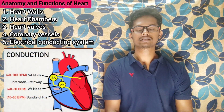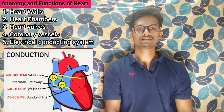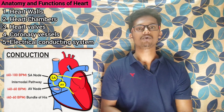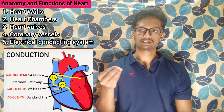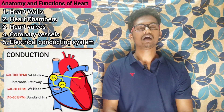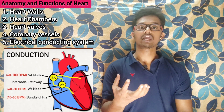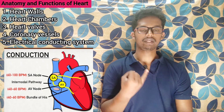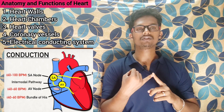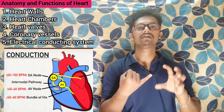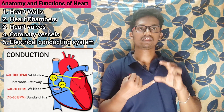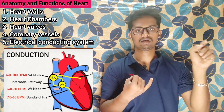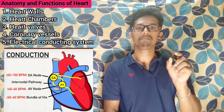Next, the electrical conducting system of the heart. An electrical impulse is generated in our body, making our body a dynamic structure. There are two nodes present: the SA node and the AV node. The SA node generates and maintains the electrical impulses in the heart. That's why it is called the pacemaker — it sets the rhythm of the heart.